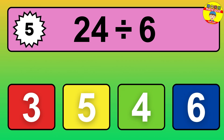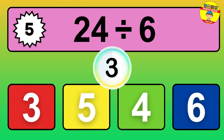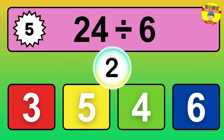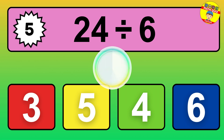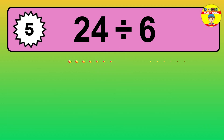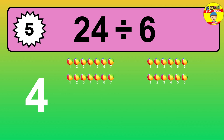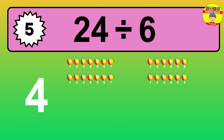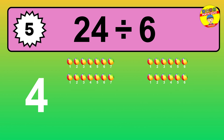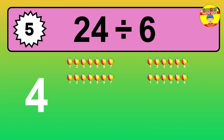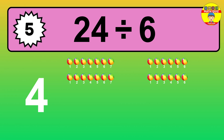24 divided by 6 — time to think! Let's go to the solution. Divide the number 24 by 6. Each group contains 6 units, so dividing 24 by 6 results in 4 equal groups. Thus, the result is 24 divided by 6 equals 4.